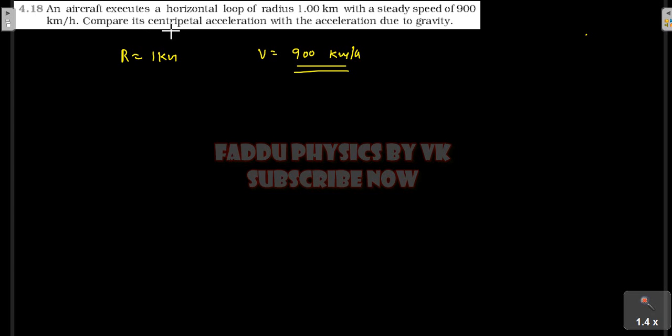To compare the centripetal acceleration with acceleration due to gravity - due to gravity, acceleration is 9.8 m per second square. We take 10 m per second square.